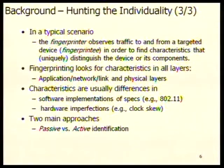The typical scenario of hunting the individuality has a fingerprinter observing traffic to and from a targeted device — the 'fingerprintee' — to find characteristics that distinguish the device or its components. Fingerprinting looks for characteristics in all layers: application, network, link, and physical. We'll talk primarily about the physical layer, because it's believed to be much more difficult to spoof or change, as it's due to inherent manufacturing and specification characteristics. Even devices from the same production line will have different capacitors or resistors influencing physical layer transmission.